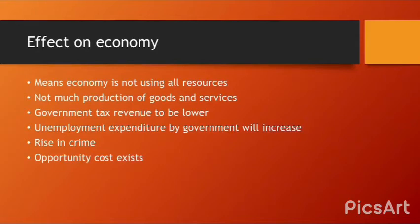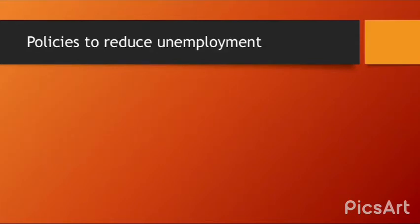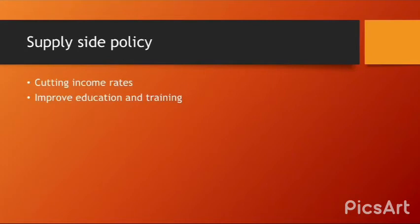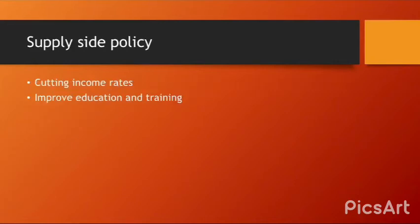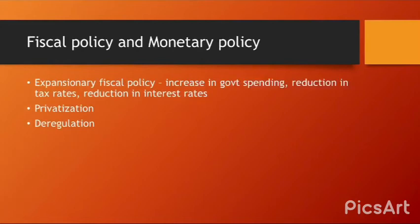Policies to reduce unemployment: supply-side policies include cutting income tax rates and improving education and training. Fiscal policy involves expansionary measures such as increasing government spending and reducing tax rates. Monetary policy involves reducing interest rates. Other measures include privatization and deregulation. Fiscal policy, monetary policy, and supply-side policy have been covered in previous videos — please click on the card above to access those.